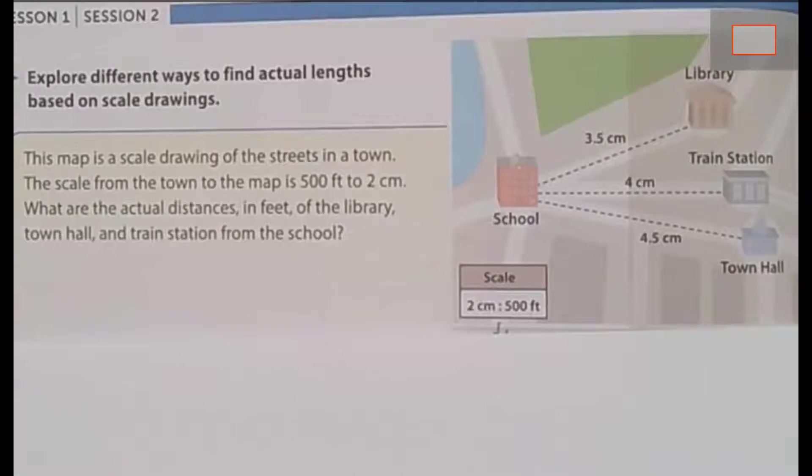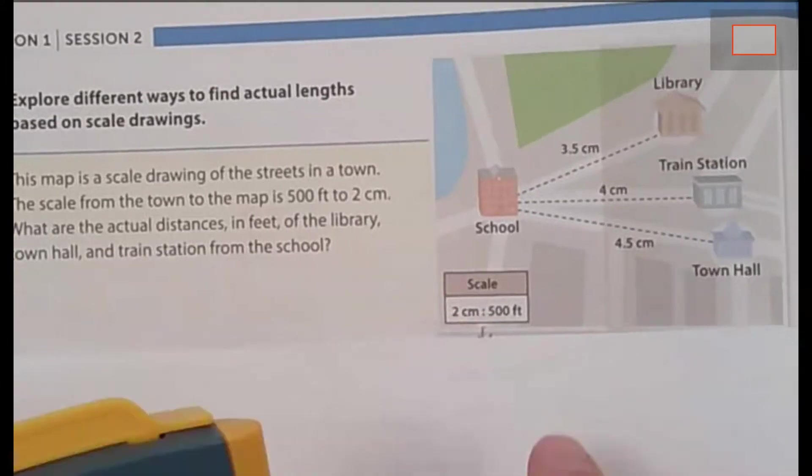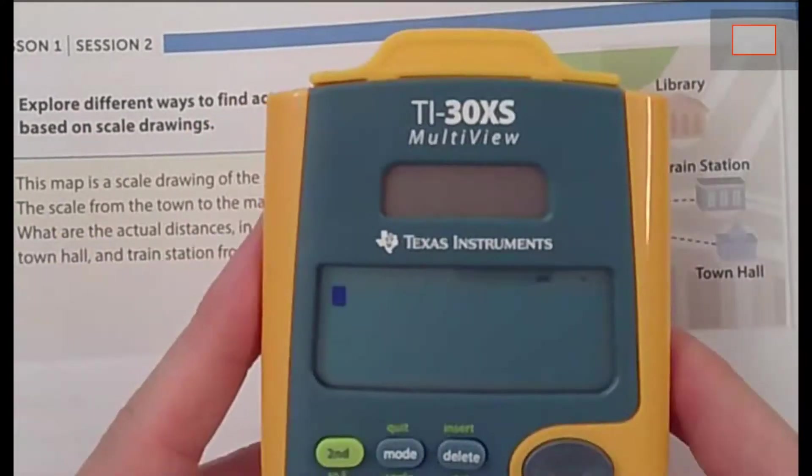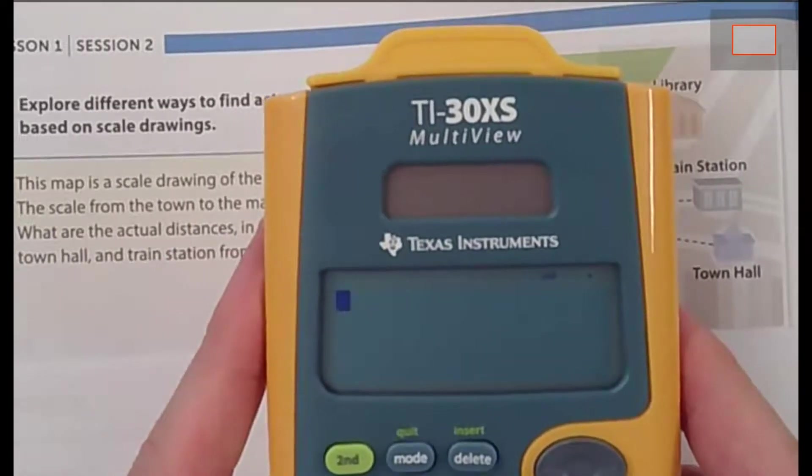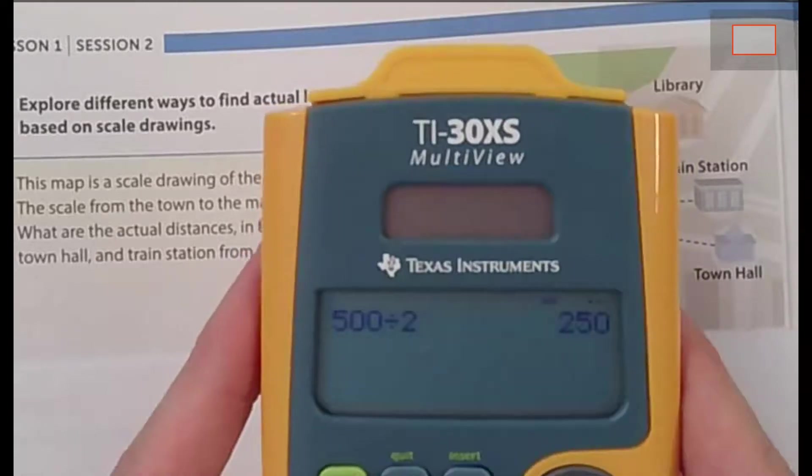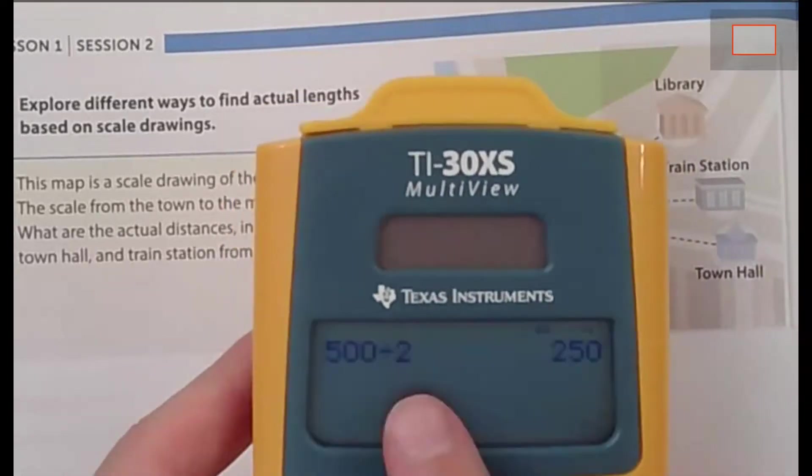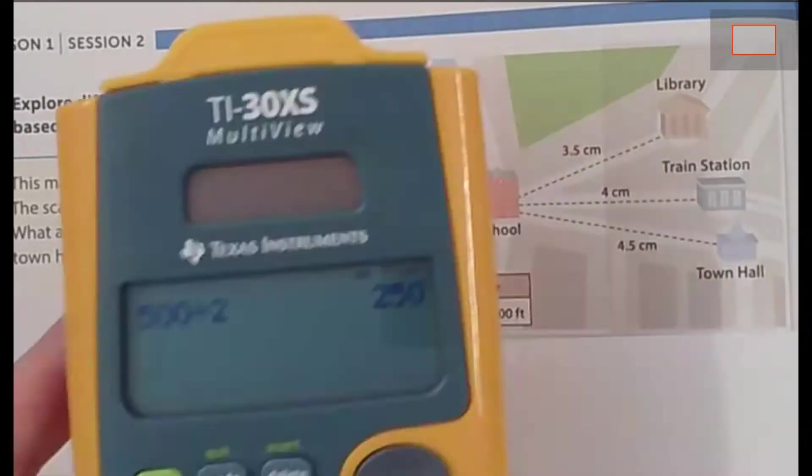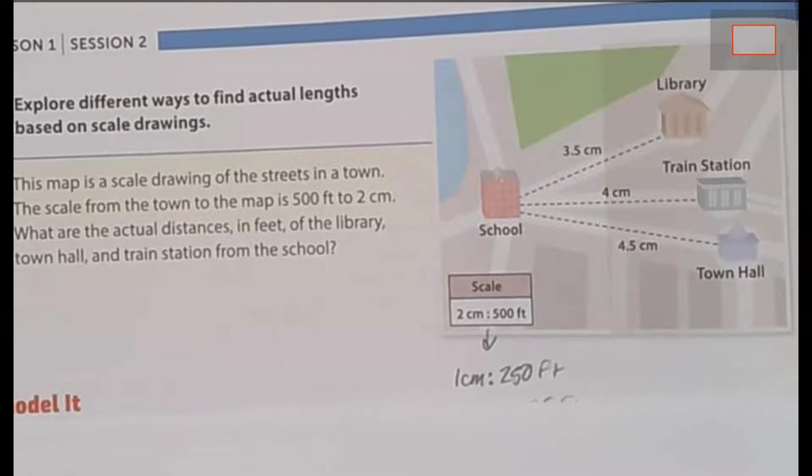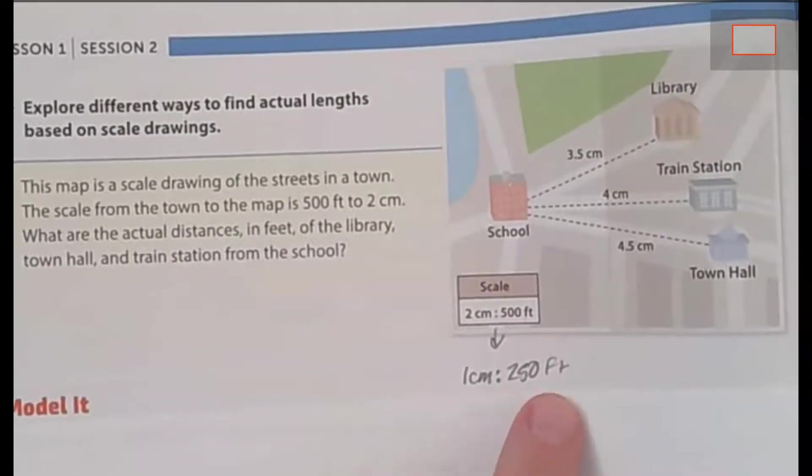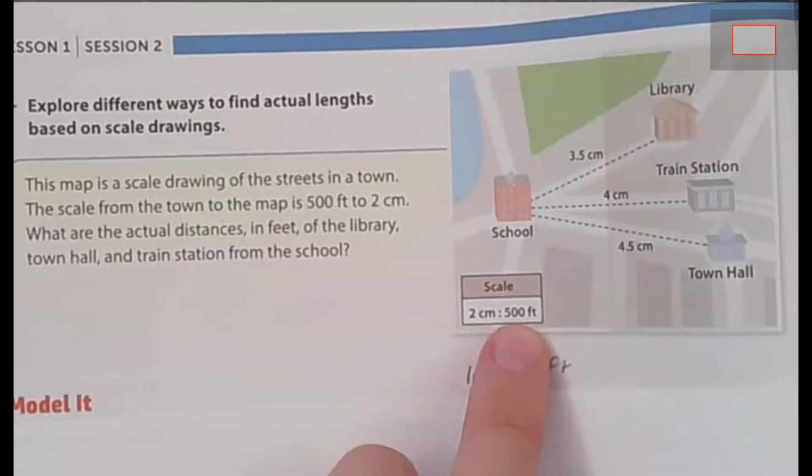As you turn over to page 10, you'll notice you have the same problem again. We're going to focus on the scale, 2 centimeters to 500. Now it probably is better to have that as 1. So take your calculator here and let's take our 500 and divide that by 2. You'll notice that if 2 centimeters is equal to 500 feet, that 1 centimeter is equal to 250 feet. And that's exactly our scale factor. 1 centimeter is equal to 250 feet. I did that by dividing 500 by 2.